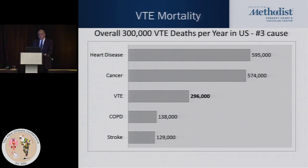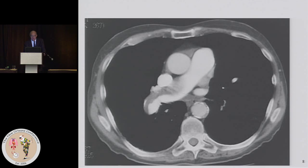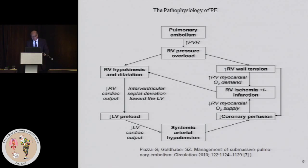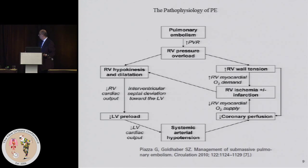Venous thromboembolism is a big problem. There are over 300,000 people that die every year in the United States as a result of venous thromboembolism. It's really topped only by heart disease and by cancer.